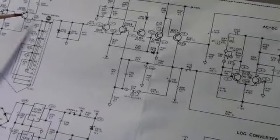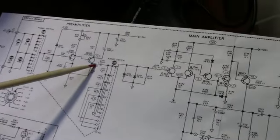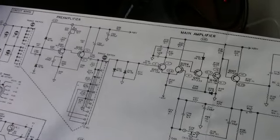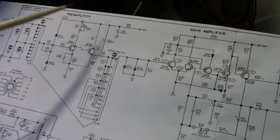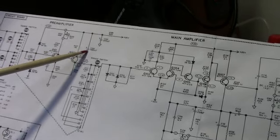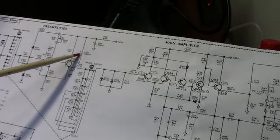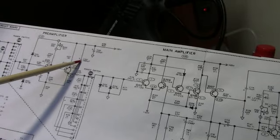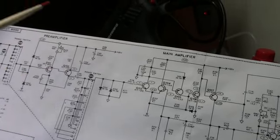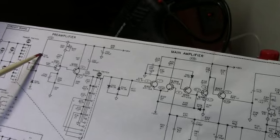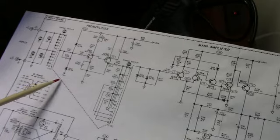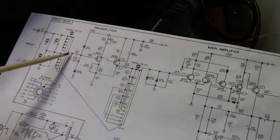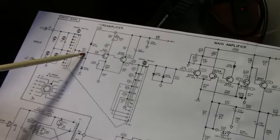Here's what the problem was: C106 was open, number one. Number two, C103 was out of tolerance, and I replaced C104. What was happening is I was getting a real low voltage on the cathode of D101. It should be plus 12 volts. That's the clamping circuit that clamps the input to plus or minus 12.